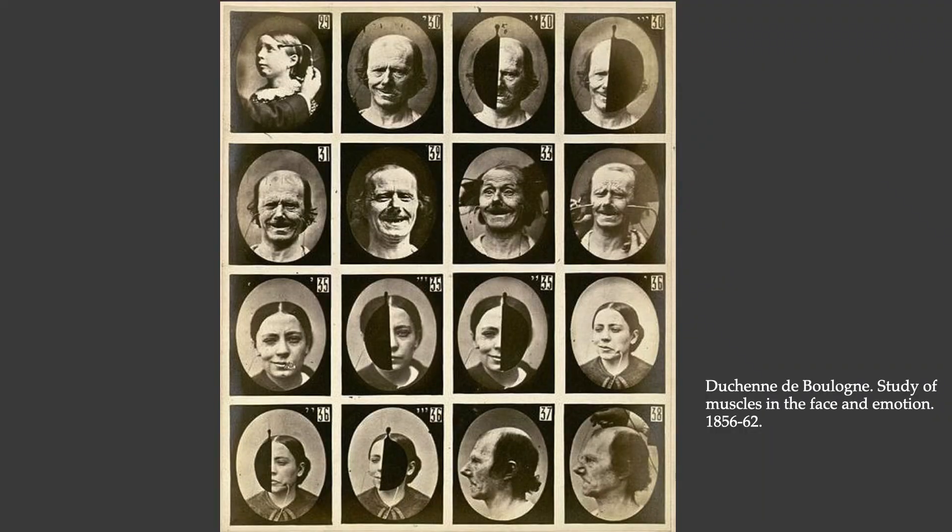These were some of the other photographs used in that publication. You can see in this diagram they've separated one side of the face from the other to show how one side could be stimulated through electrodes while the other half remained unaffected.